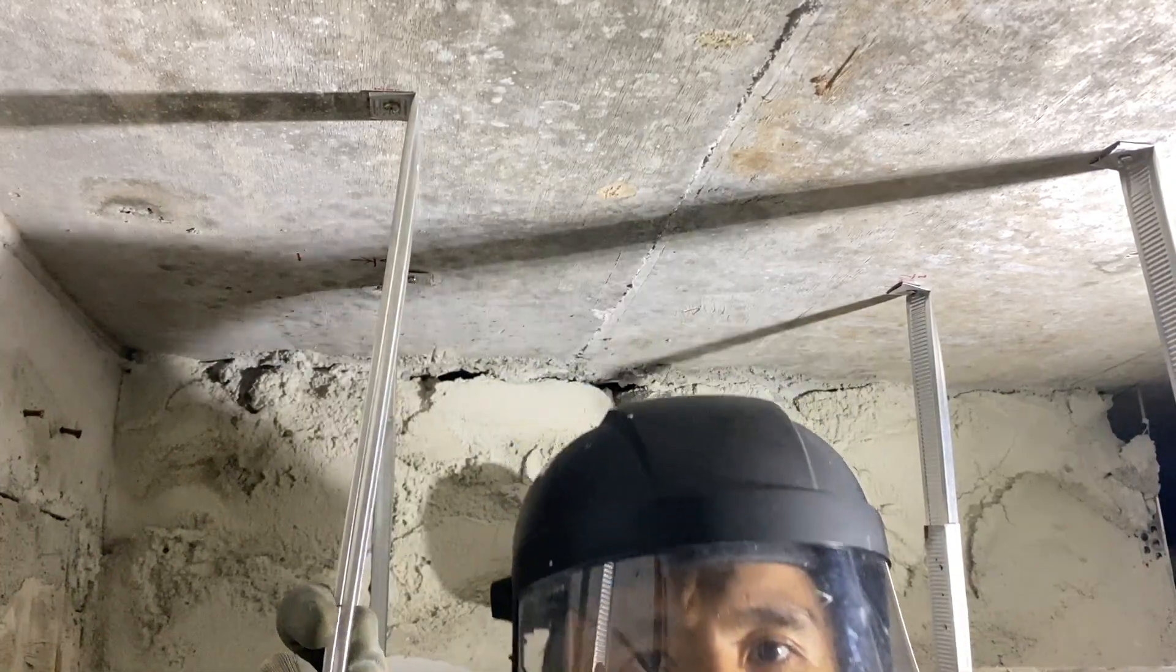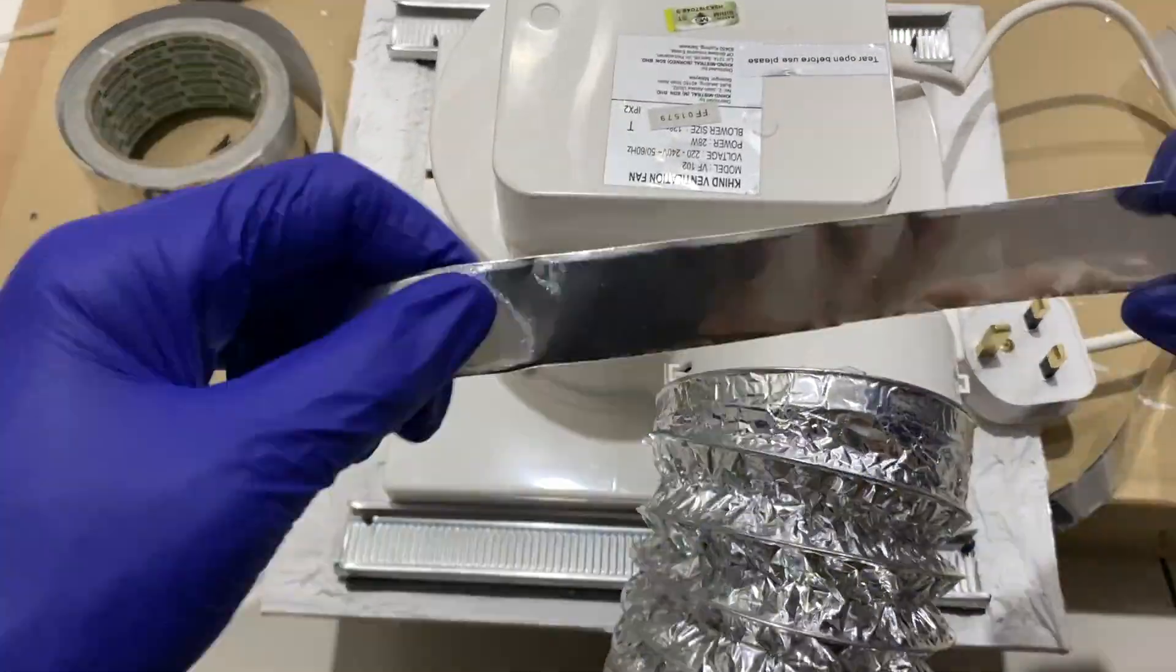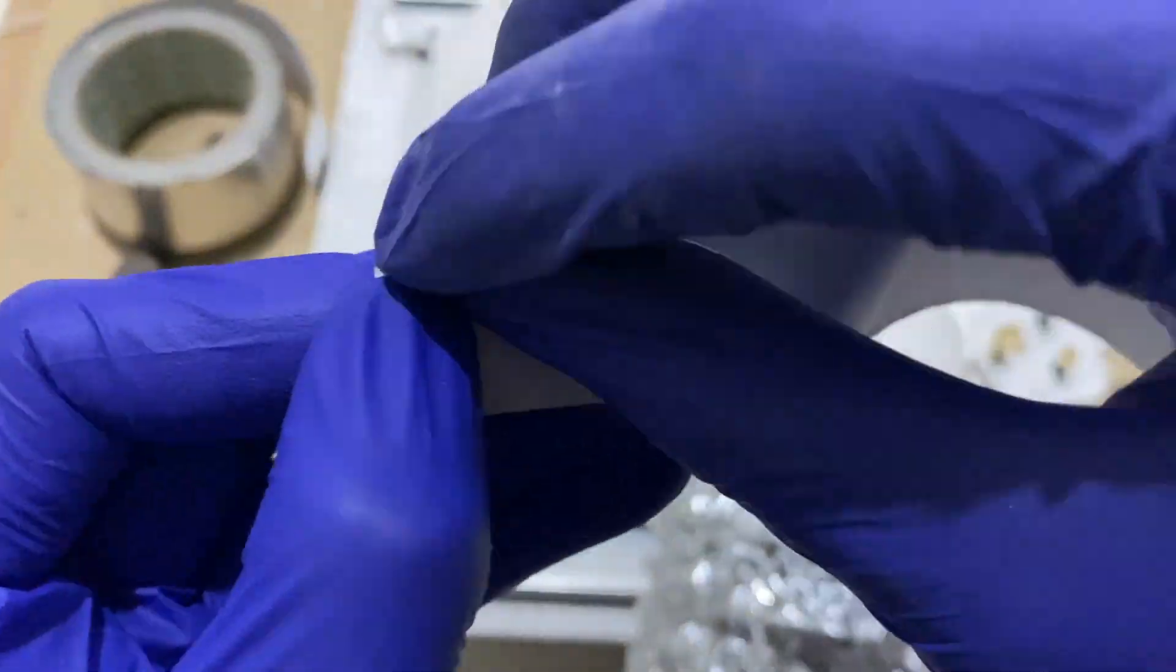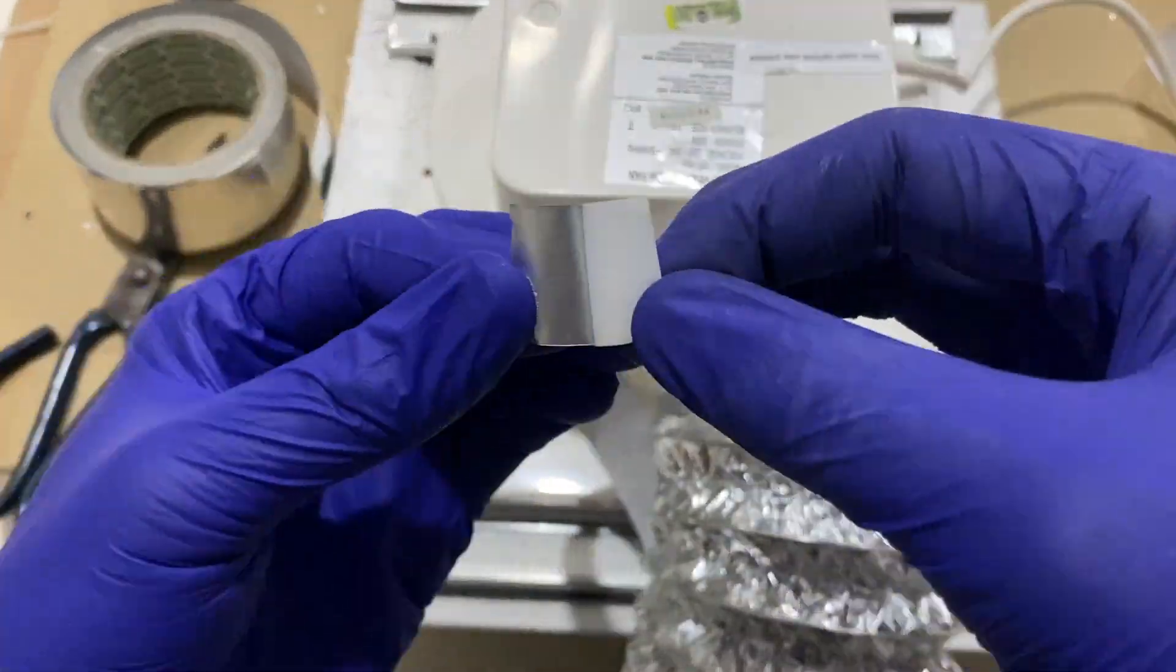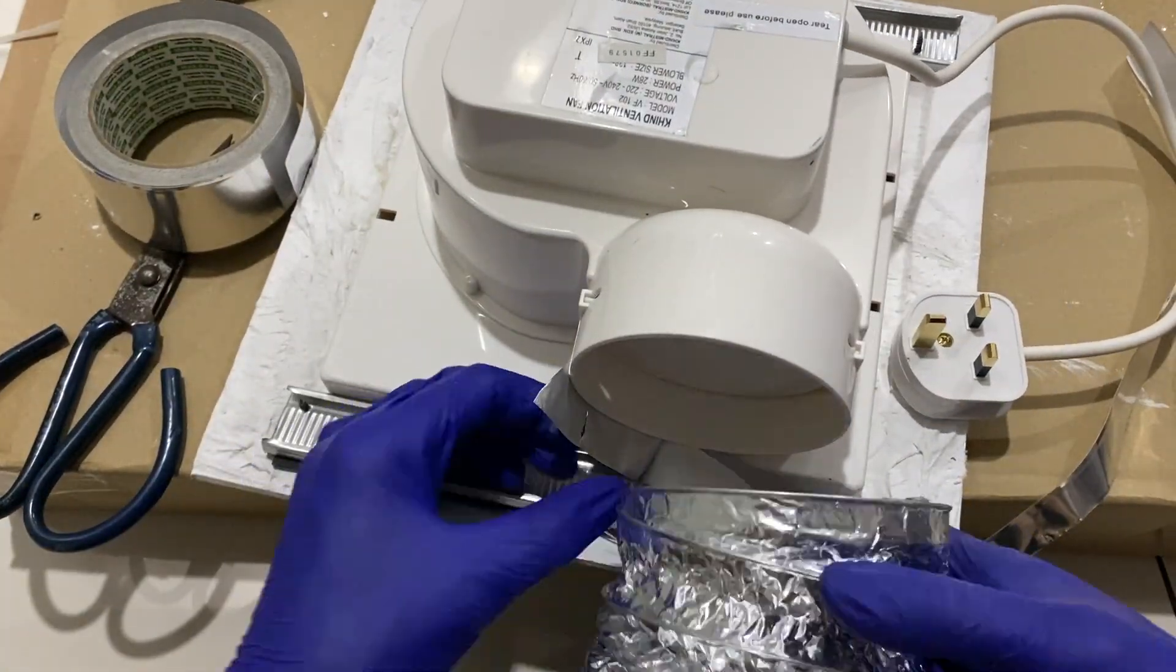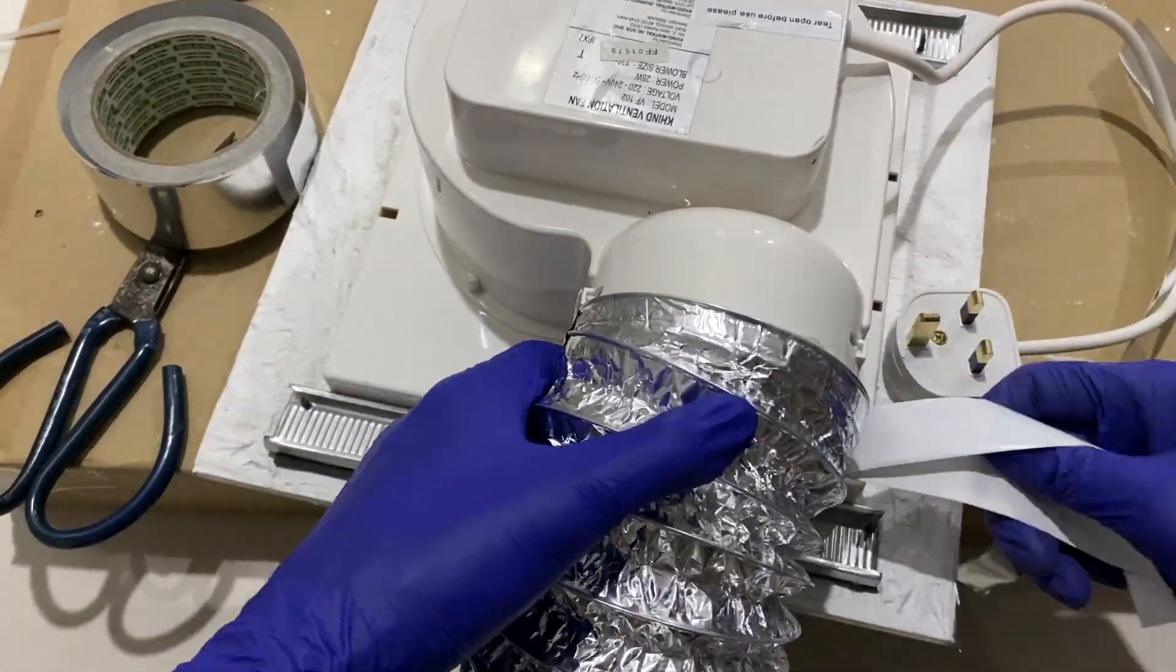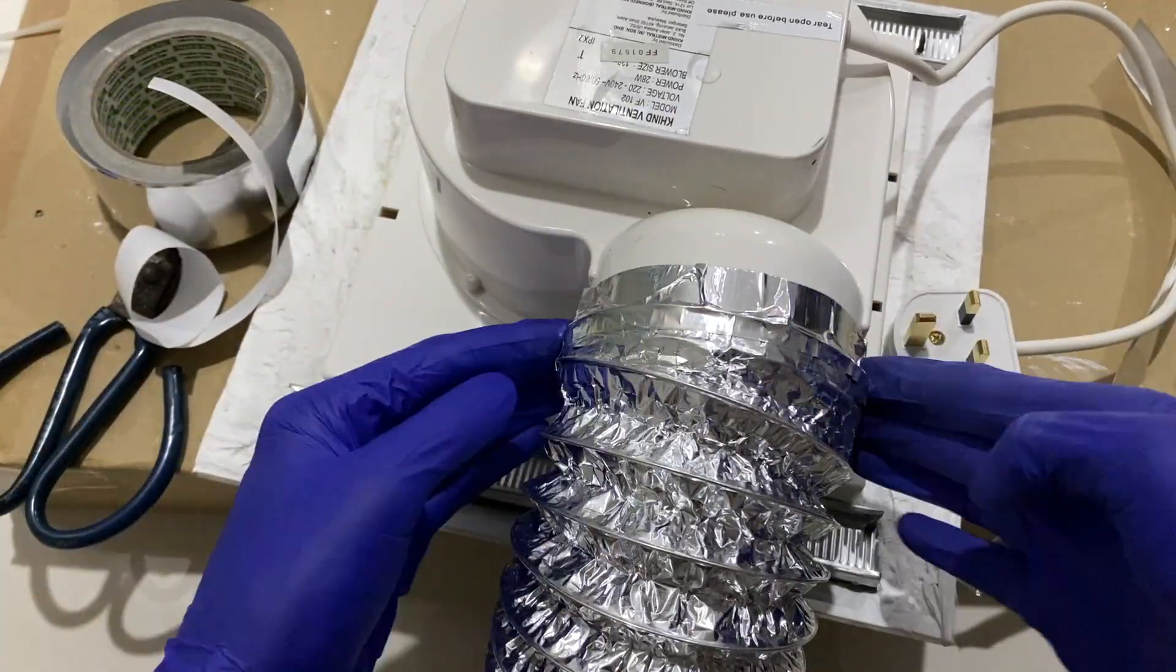Next, fixing the aluminum flexible ducting holes onto the ventilation fan here. First remove bits of the backing paper and pull the paper as you stick the foil along the circumference onto the ventilation fan. Now it's done.